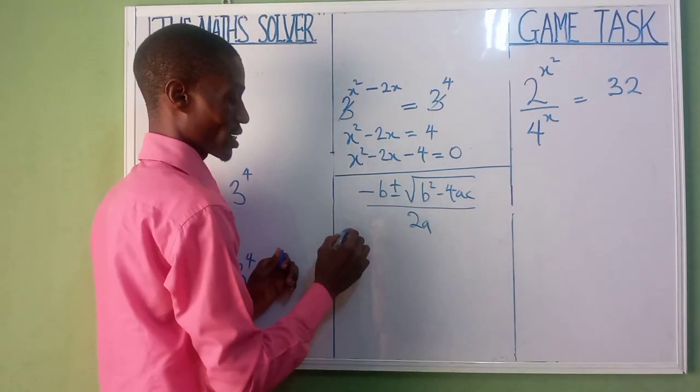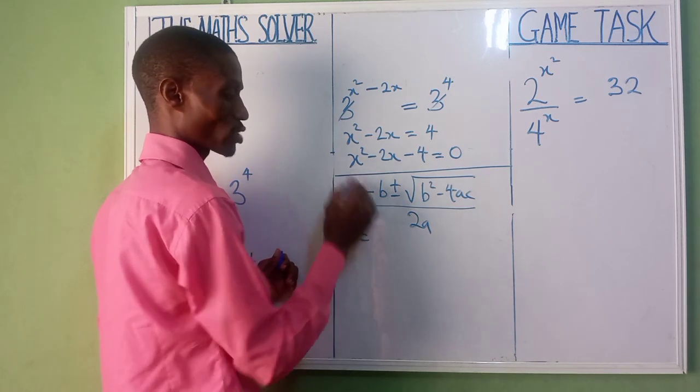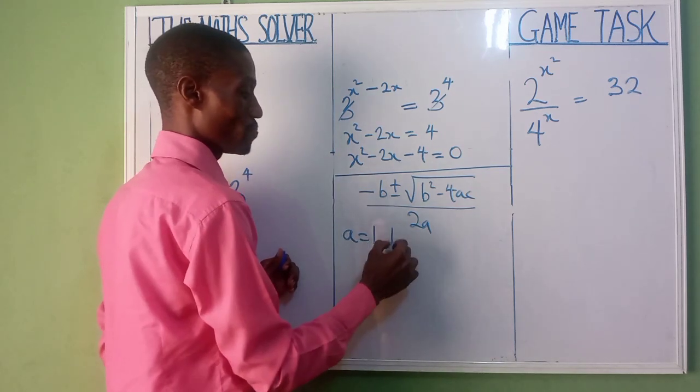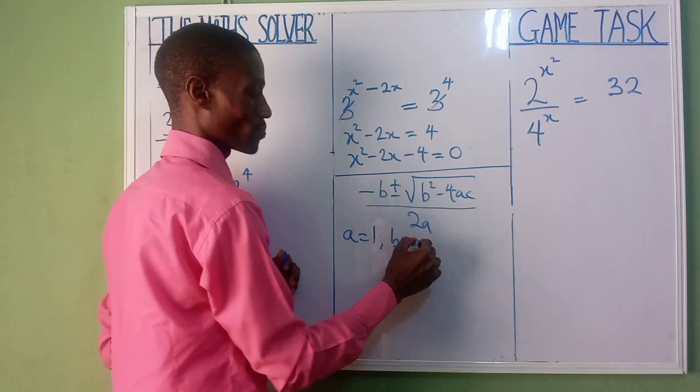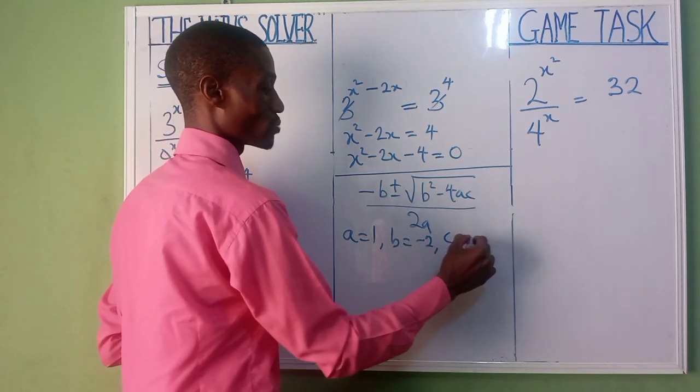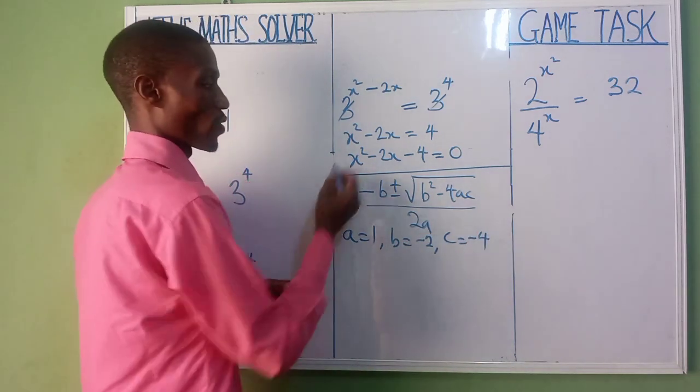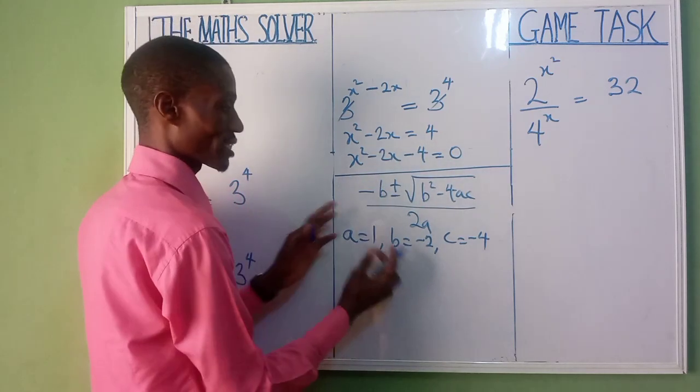How to use quadratic formula? That is, minus b plus or minus square root of b squared minus 4ac divided by 2a. Now what's the coefficient of my x squared? The coefficient of my x squared is 1. My b will be minus 2, the coefficient of your x. And my c is minus 4. So let's now substitute it back.